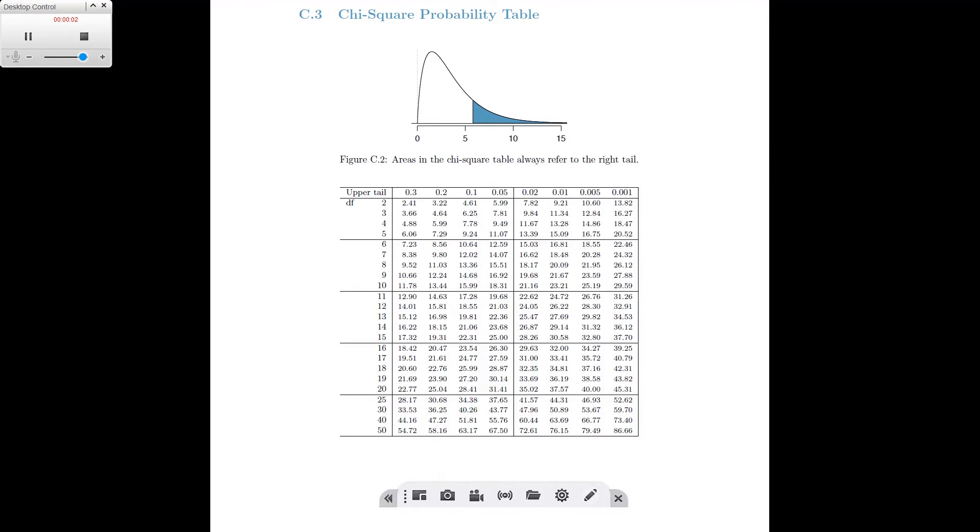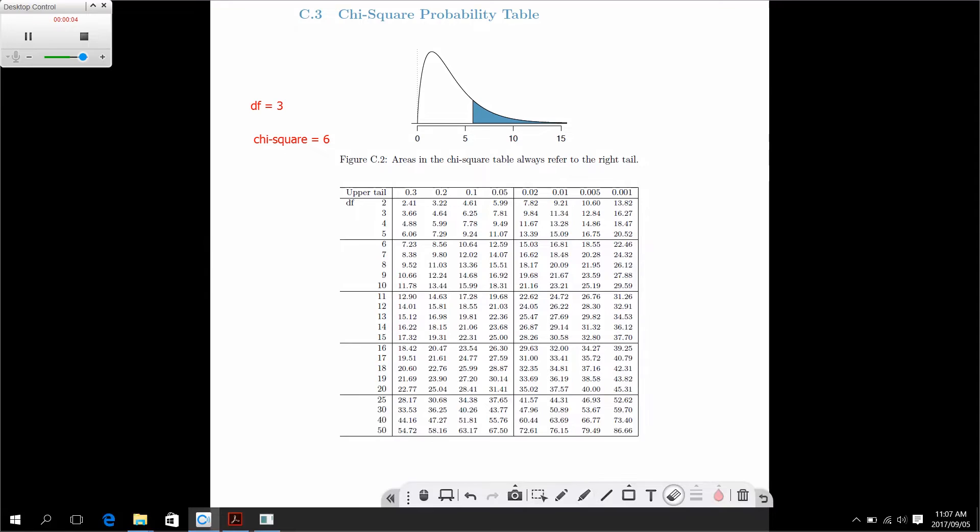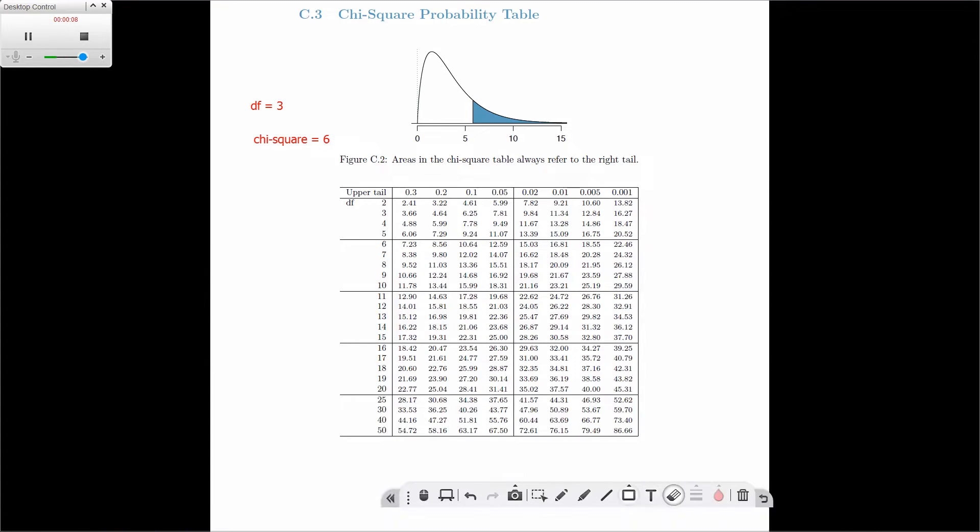So let's look at another example. In this case, we've got a degree of freedom of 3 and a chi-square value of 6. So once again, we start with a degree of freedom, and we isolate that row, in this case 3.